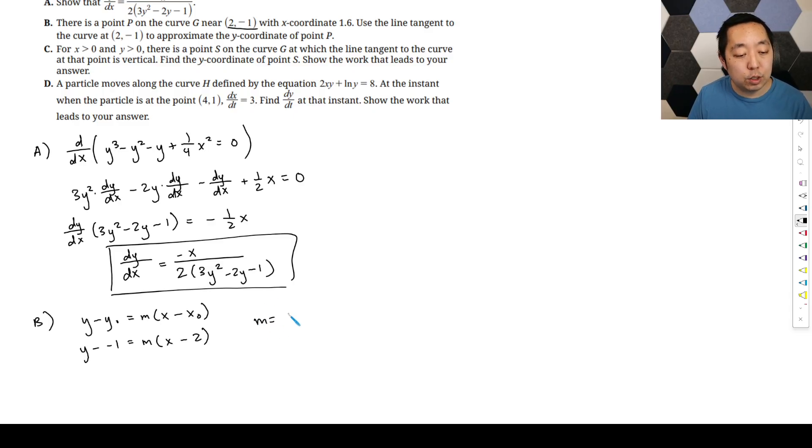But don't just take the whole derivative at that point. At that point, which is 2 negative 1, which means we're just going to plug 2 negative 1 into our derivative here. So minus 2 over 2 times 3 times negative 1 squared minus 2 times negative 1 minus 1.